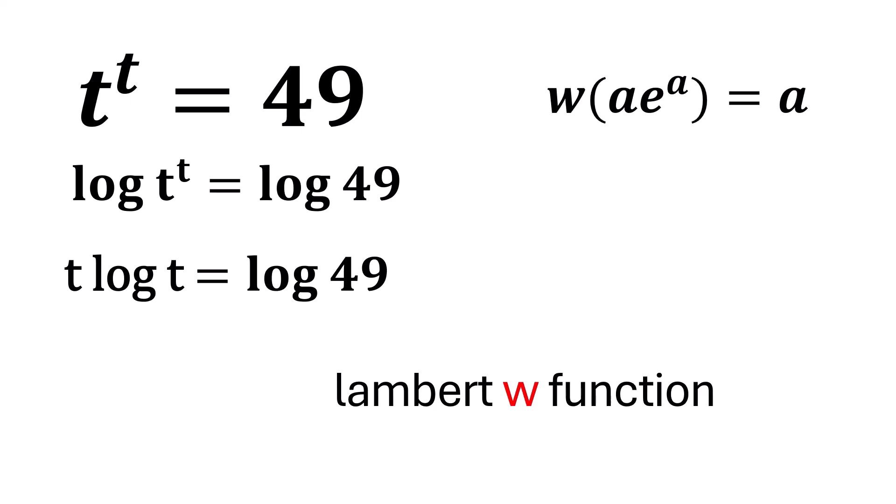For example, consider the expression 3 times e raised to the power of 3. You can see this is of the form a times e to the power of a. And here the value of a is 3. So, if we apply the Lambert W function to this expression, we get 3.